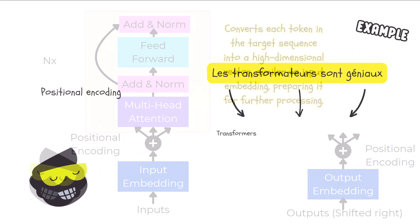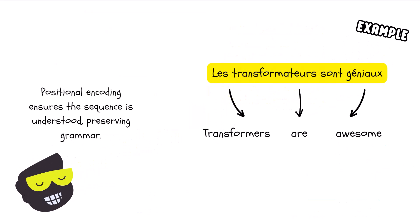For instance, if the model is translating from English to French, the output embedding would take the French sentence and convert each word into a numerical vector. Positional encoding would then help the model understand the sequence, ensuring LE is recognized as the first word, and GENIEU as the last, maintaining the correct grammatical order. And, side note, what do you think of my accent? Terrible, right? Anyway, so, in the decoder, we have a masked multi-head attention.